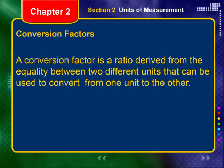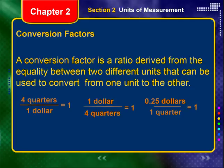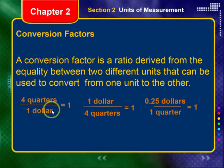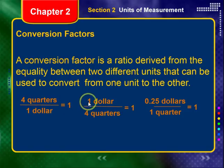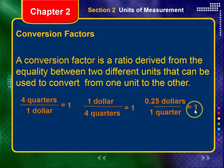Conversion factors are a huge deal in this class — if you cannot do this, you will struggle for nearly the entire course. A conversion factor is a ratio derived from the equality between two different units that can be used to convert from one unit to another. Four quarters equals one dollar — the same amount of money expressed in different units. When you divide an amount by the same amount, you get one. A conversion factor divided by itself equals one — that's the key.